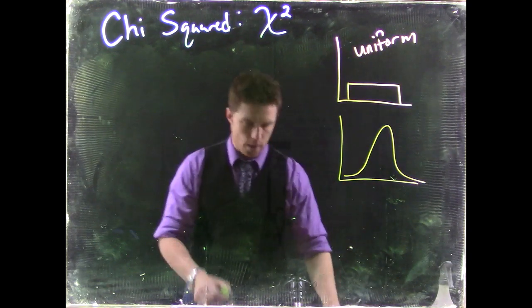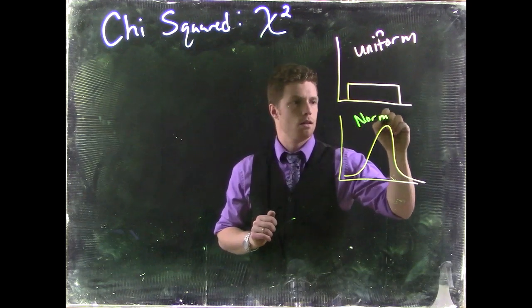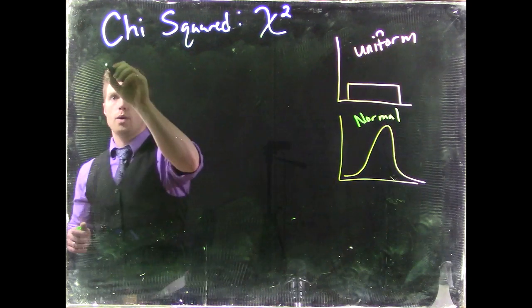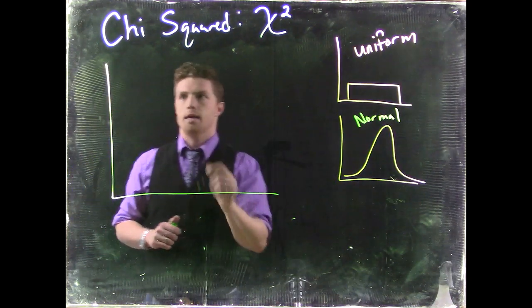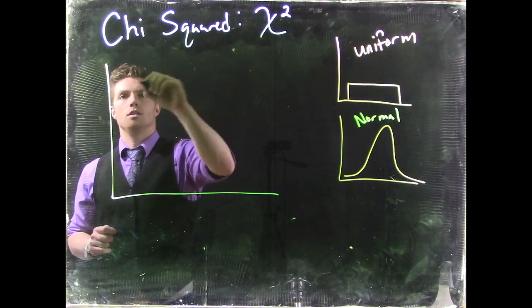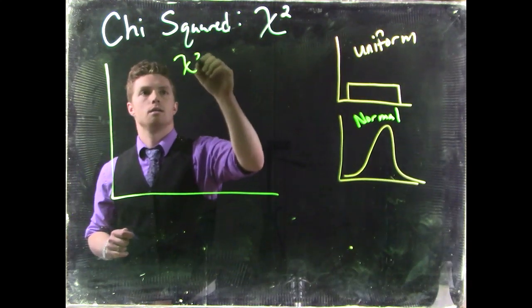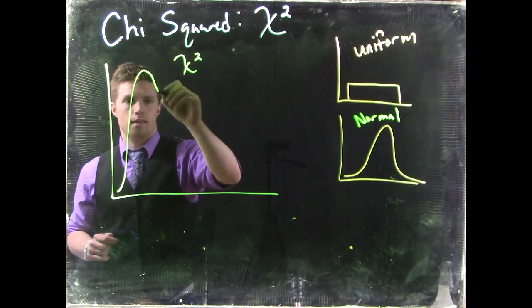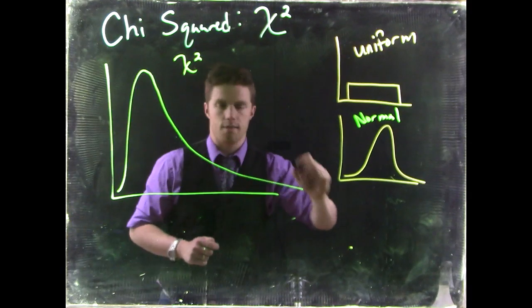Our chi-squared—let's label this. Chi-squared looks like this. So this is a chi-squared, and it looks like this. It kind of comes up like this, and then it tails off heavy.